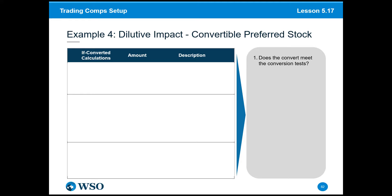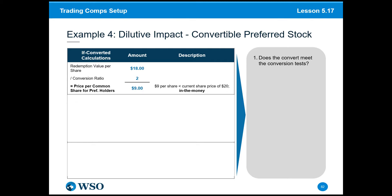Our first question is: does the convert meet the conversion tests? There are three steps to follow. First, we figure out whether it is in the money or out of the money. We take the redemption value per share — $18 — and divide it by the conversion ratio. We're not multiplying by total preferred shares outstanding here; we take the redemption value divided by the conversion ratio and get a conversion price of $9 per common share. Since $9 is less than the current share price of $20, we know we're in the money.